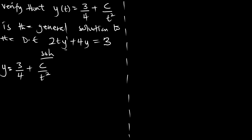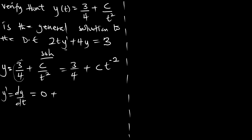Our y', the derivative of y with respect to t: the constant 3/4 differentiates to 0. We rewrite c/t² as c·t^(-2), and differentiating gives -2c·t^(-3). So y' = -2c·t^(-3).